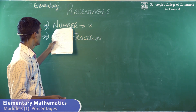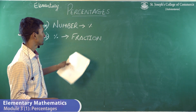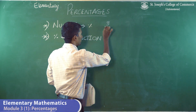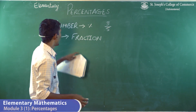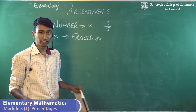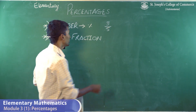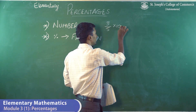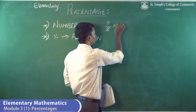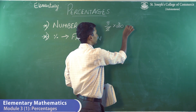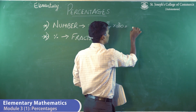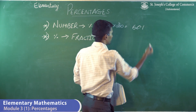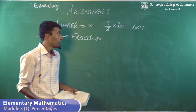For example, take 3/5 as the number. If I want to convert it into a percentage, I just multiply it by 100. So, 5 twos are 10, 3 twos are 6 — that gives 60%.